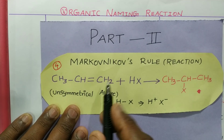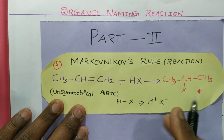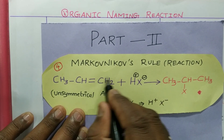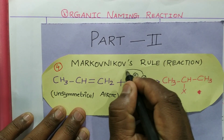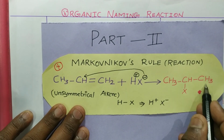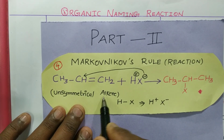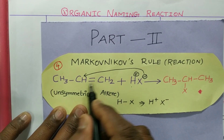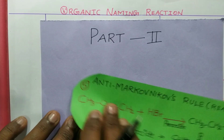When an unsymmetrical alkene reacts with a halogen acid, the negative entity will go and approach where the lesser number of hydrogen atoms is present between the double-bonded carbons. That place will be occupied by the negative entity. This is the Markovnikov rule.